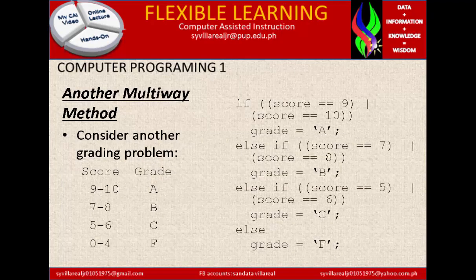Another multi-way method, consider another grading problem. Score and grade: Score is 9 to 10, that is A. 7 to 8, B. 5 to 6, C. 0 to 4, F.